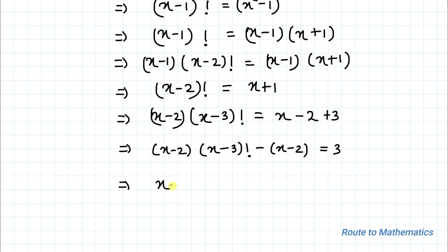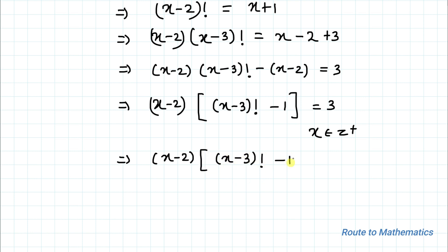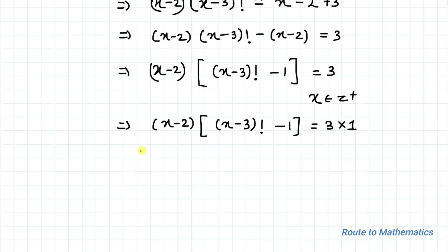Taking (x minus 2) as common factor, we have (x minus 2) multiplied with [(x minus 3) factorial minus 1] equals 3. Since x is a positive integer and 3 is a prime number, we can write (x minus 2) times [(x minus 3) factorial minus 1] equals 3 times 1.